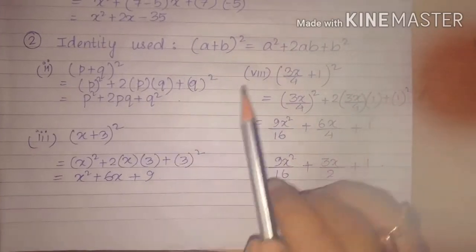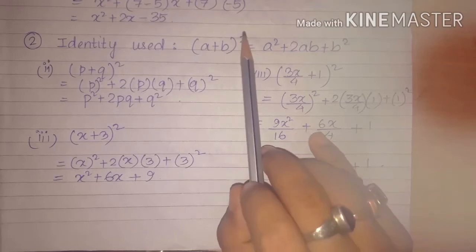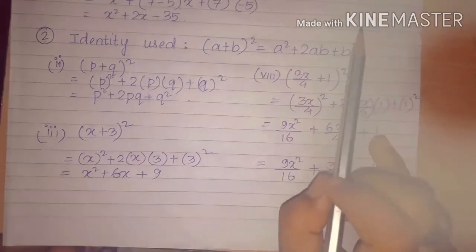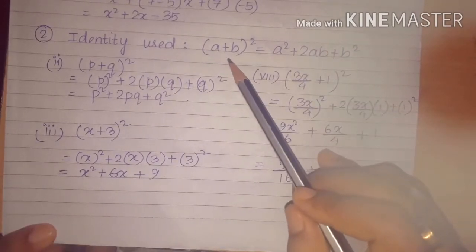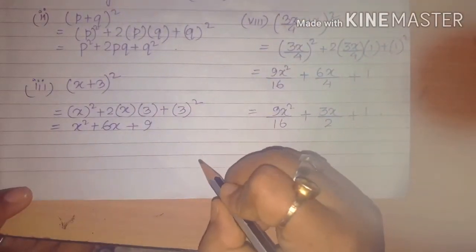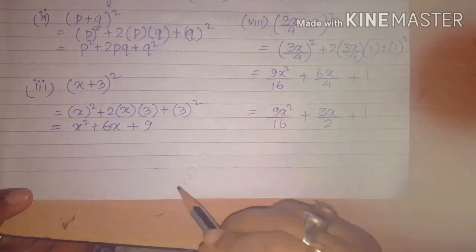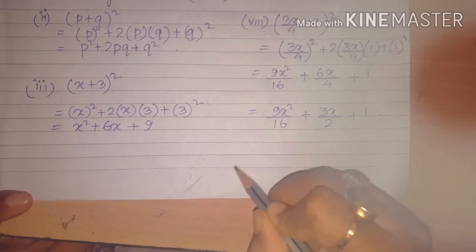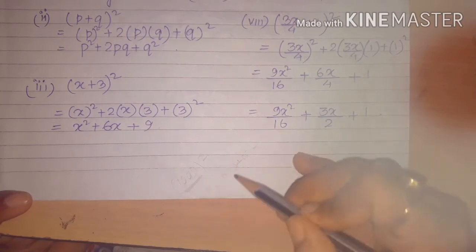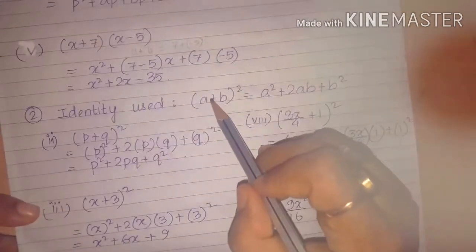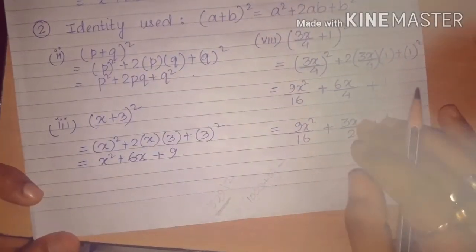In question number 2 we use the identity (a+b)² = a² + 2ab + b². Using this identity we can find many values. For example, to find 1009², we can write it as (1000+9)², splitting 1009 into 1000 and 9, and then apply the (a+b)² formula.